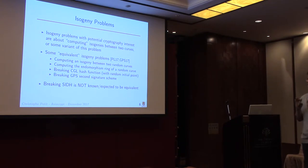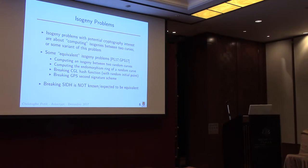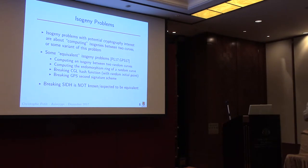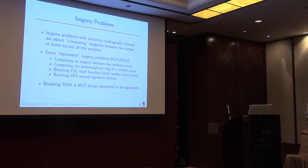The pure problem would be: given two curves, compute an isogeny between them. There are several related problems. For example, computing the endomorphism ring of a random curve — an endomorphism is just an isogeny from a curve to itself, and this set has a ring structure. Computing this ring is equivalent to computing an isogeny between two curves. Breaking the hash function by Charles, Gorin, and Loder is also equivalent. Breaking the signature scheme with Steven and Javier is also equivalent. However, breaking SIDH is not known to be equivalent to those problems.